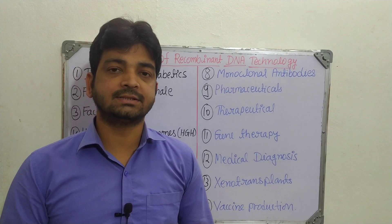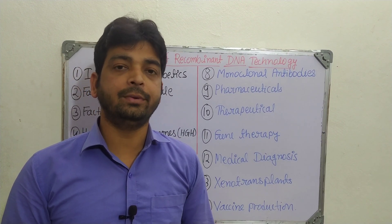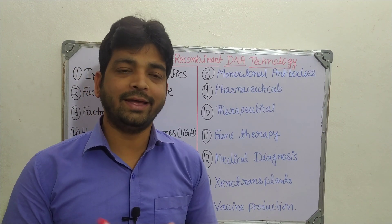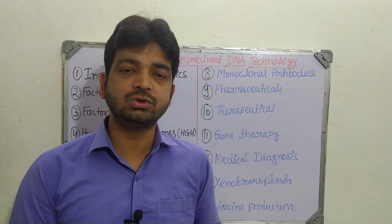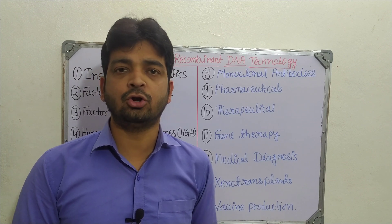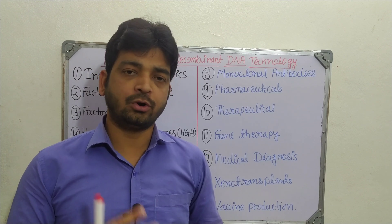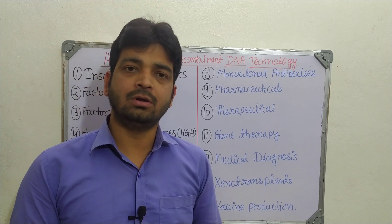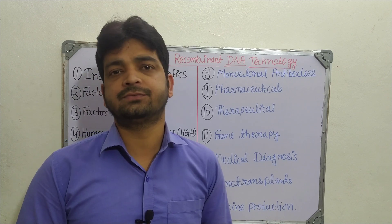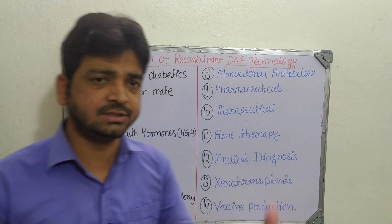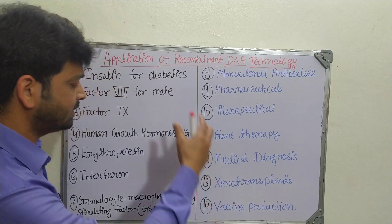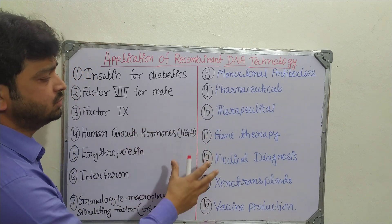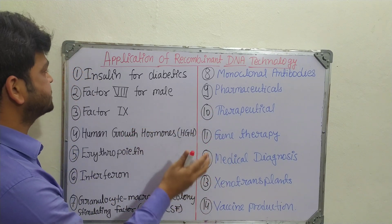We are going to discuss the applications of recombinant DNA technology — the fields where we can use this technology for production of higher-quality constituents useful for human beings. There are 14 types of applications which we can mention.